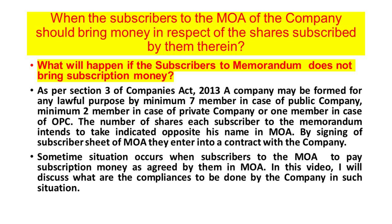As per Section 3 of the Companies Act 2013, a company may be formed for any lawful purpose by a minimum of 7 members in case of a public company, minimum 2 members in case of a private company, and 1 member in case of OPC. The number of shares each subscriber to the memorandum intends to take is indicated opposite his name in the memorandum of association. By signing the subscriber sheet of MOA, they enter into a contract with the company.